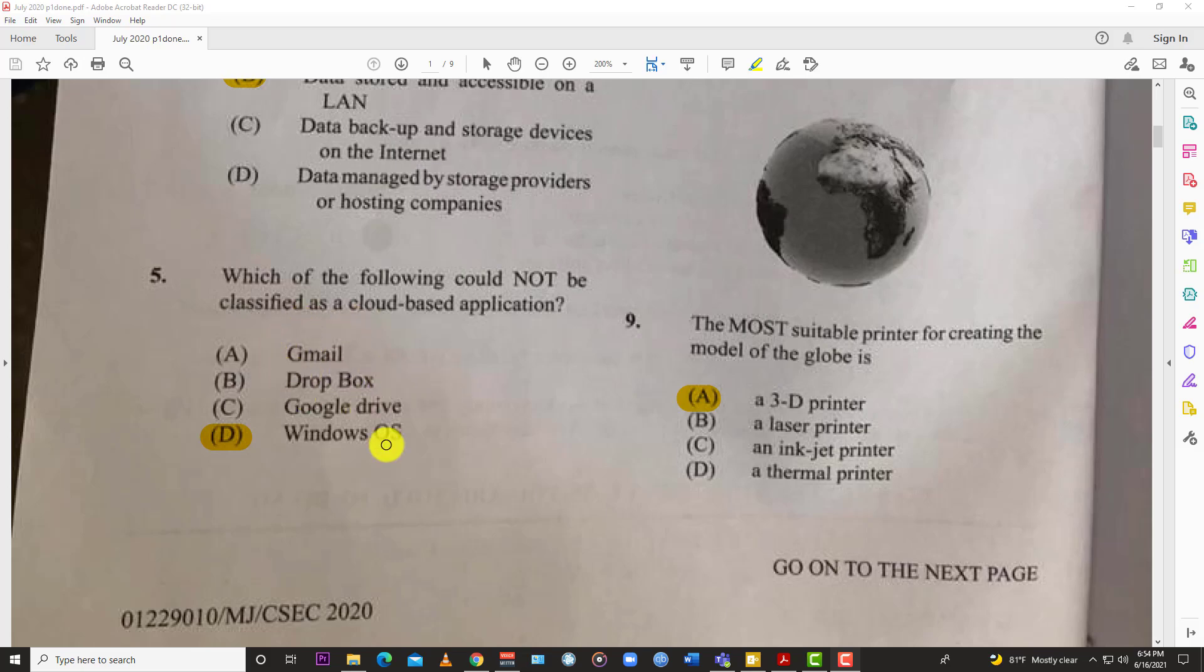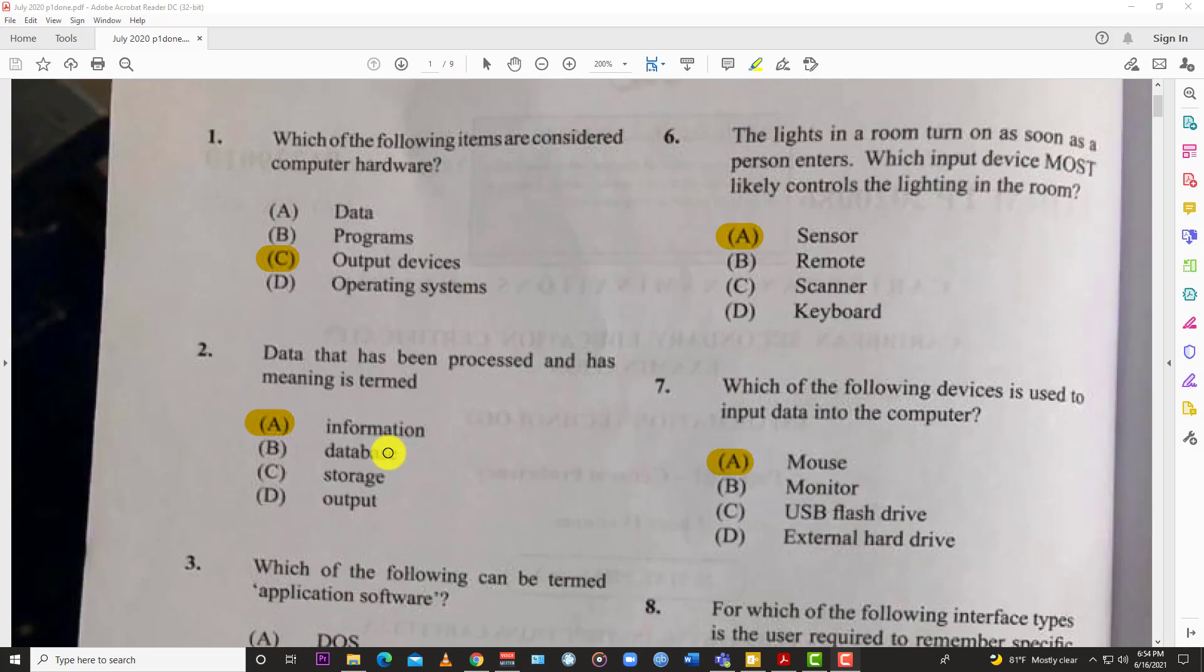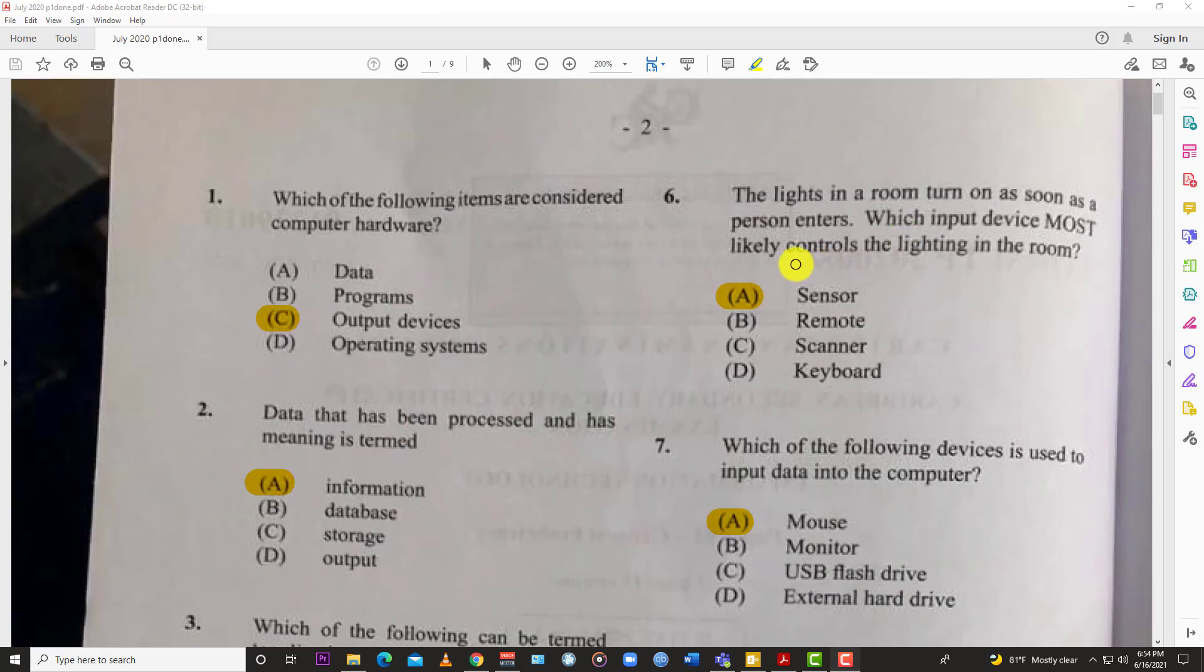Number six: the lights in a room turn on as soon as a person enters. Which input device most likely controls the lighting in the room? Of course the best answer is A, sensor. A remote means you have to physically do it yourself. A scanner, well you don't have scanners installed in your home like that. It's not a keyboard, so the best answer is a sensor - infrared sensor or motion sensor. Once they pick up motion, they activate.